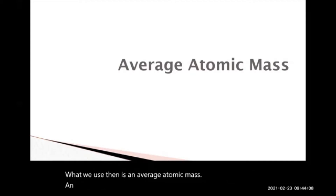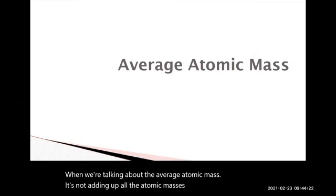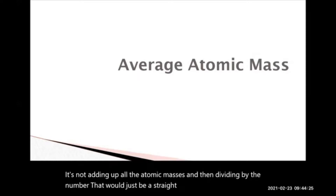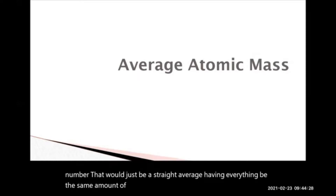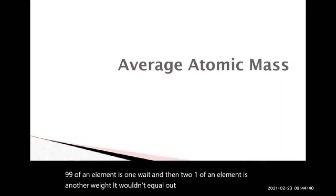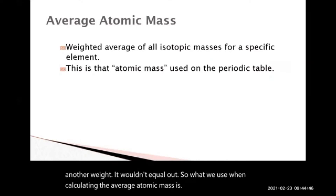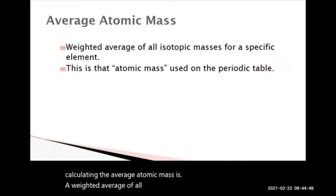An average weight is very different than a straight average. When we're talking about the average atomic mass, it's not adding up all the atomic masses and then dividing by the number — that would just be a straight average, having everything be the same weight. It wouldn't be fair if 99% of an element is one weight and 1% is another. So what we use is a weighted average of all the isotopes for a specific element.